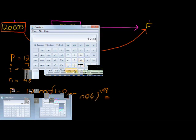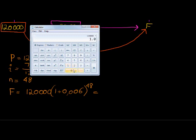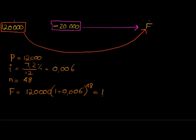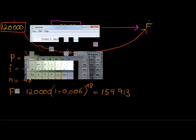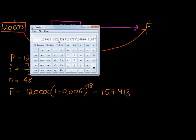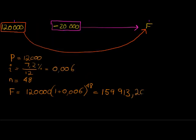That gives me an answer of 120,000 times 1.006 to the power of 48, and that is 159,913.2024429. Only round off in your final answer.